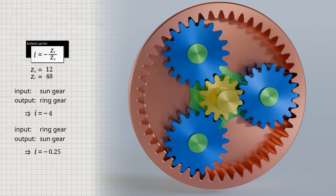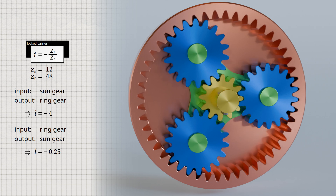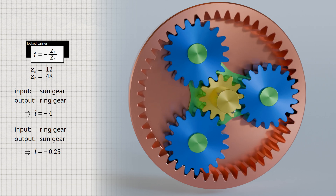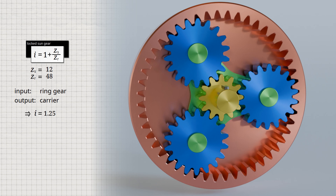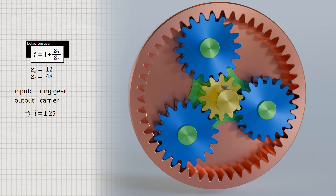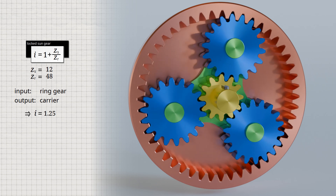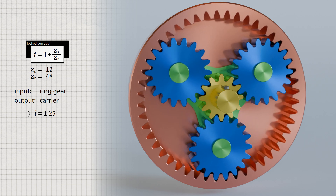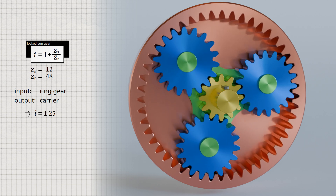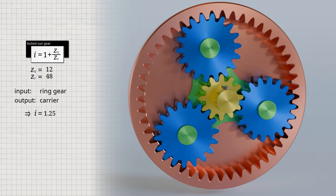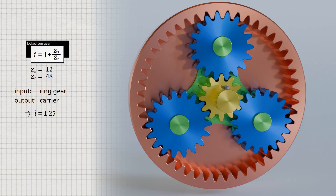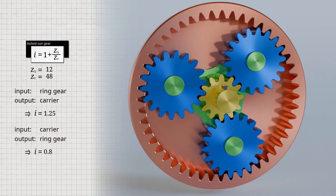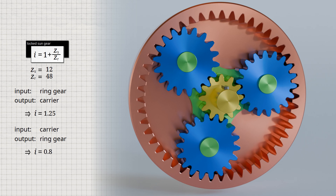A reverse gear can therefore be created with such a transmission ratio. Another way of using the planetary gearbox is to lock the sun gear and have the ring gear as the input and the carrier as the output. In this case, the transmission ratio is 1.25 while the direction of rotation is maintained. Interchanging the input and output results in a reciprocal transmission ratio of 0.8.